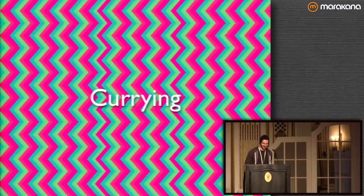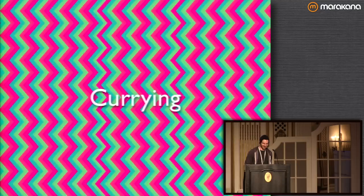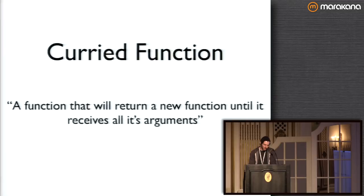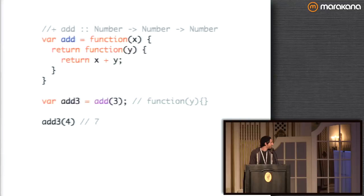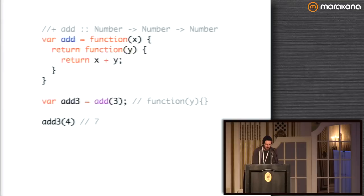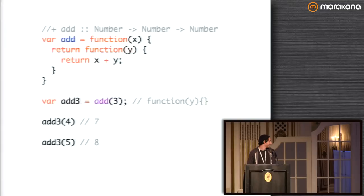So, currying. I just put that in there to wake you guys up because it's the last talk of the day. Currying is just a function that keeps returning a new function until it gets all its arguments. With this function "add" — these type signatures are just comments, we've been working on a type parser but haven't gotten too far — we take x and return a new function that takes y, and then we add them together. You can call it: we have add(3). When we call add with 3, we say that's partially applying it with 3. Then we get a new function back. We can call it with 4 and get 7, or call it again with 5 and get 8.